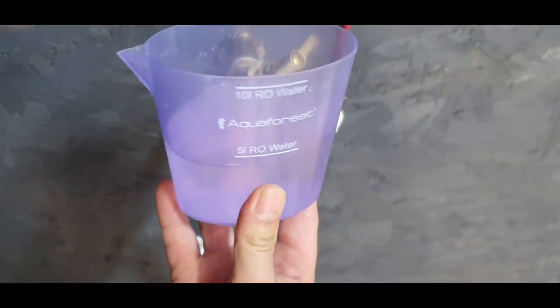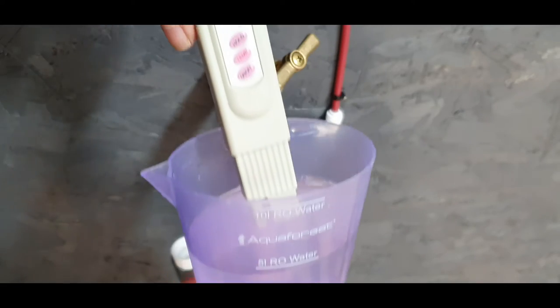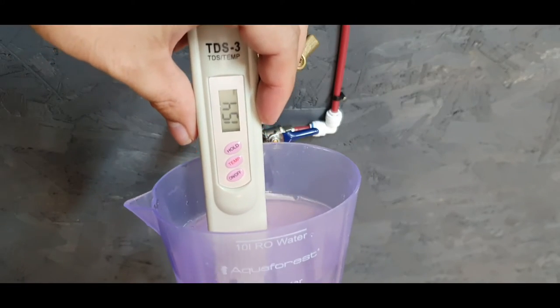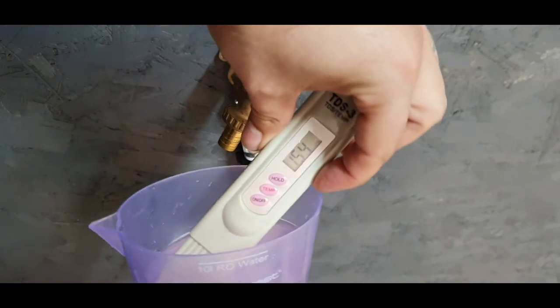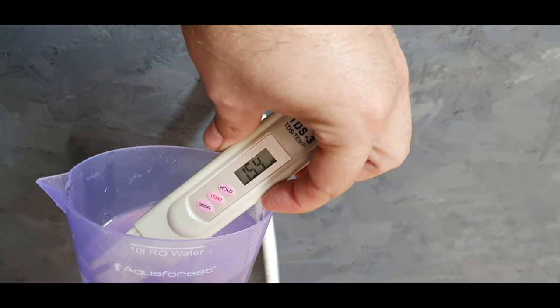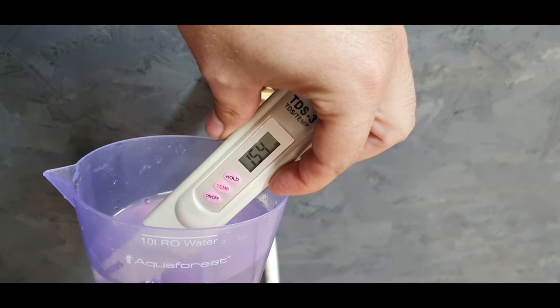Let's have a look. Tap water TDS is 154, so that's actually not too bad for tap water. In a normal aquarium, that would be fine. A freshwater aquarium, that'd be fine.